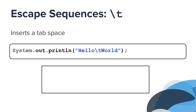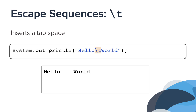The backslash t escape sequence inserts a tab space — it is equivalent to using the tab key on a keyboard. In this string, the tab is inserted between the words 'hello' and 'world,' so when you run the program, you get 'hello,' a large space, then 'world.' This escape sequence comes in handy when you want to format text that is printed to the console.